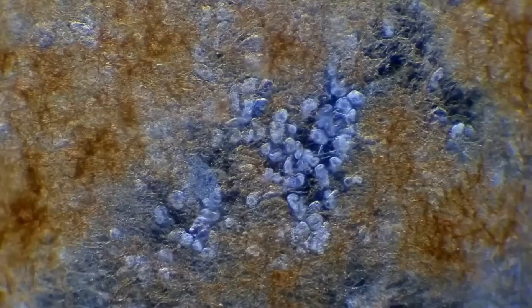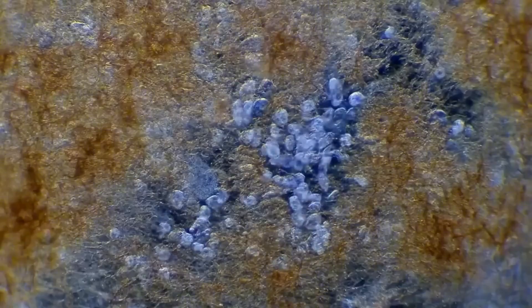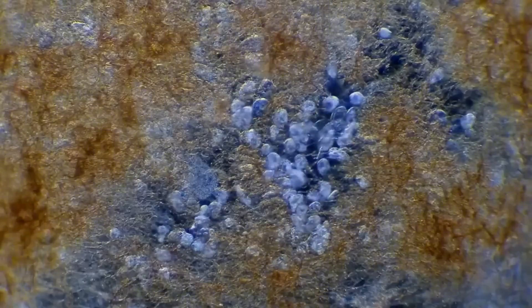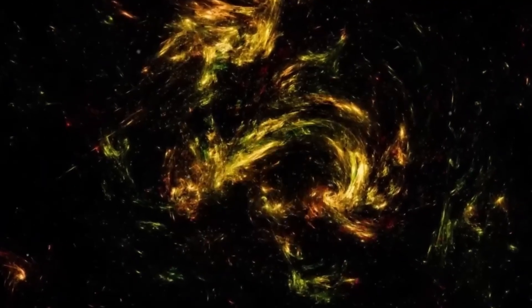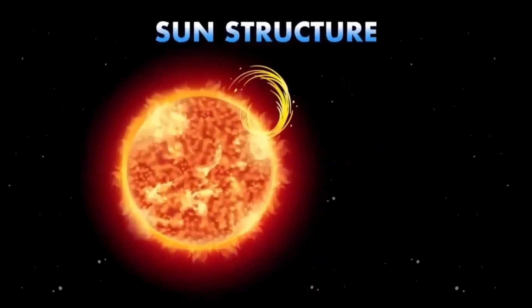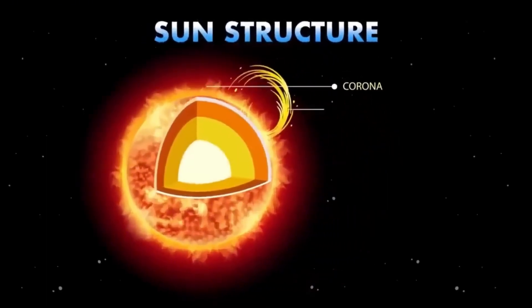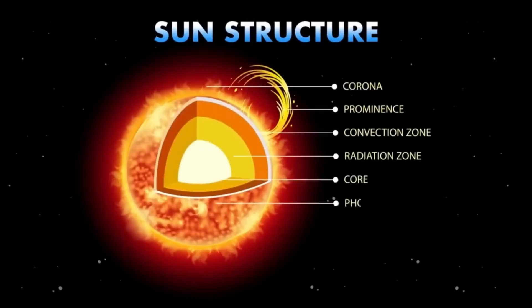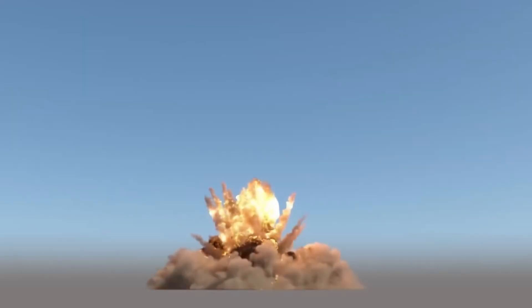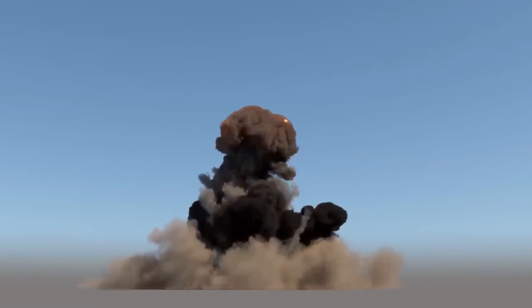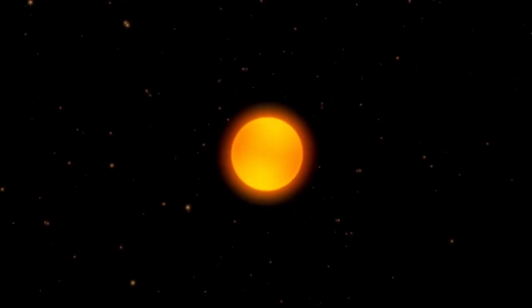This manifests itself in pulsations that alter Betelgeuse's brightness over time. These pulsations release enormous amounts of energy, generating strong stellar winds that tear large amounts of mass from the outer layers of the star, a phenomenon characteristic of red supergiants like Betelgeuse. These stellar winds cause stars to lose mass, which alters the distribution of matter and energy within them and further affects their evolution.